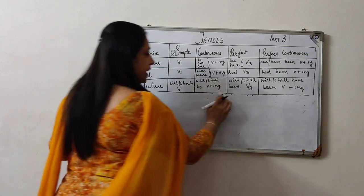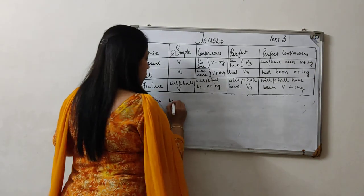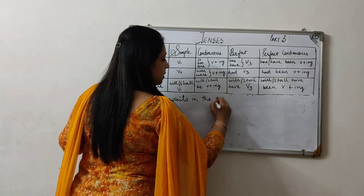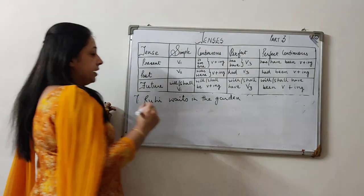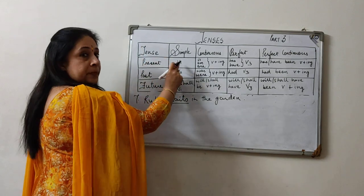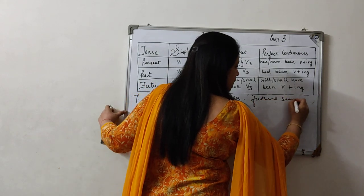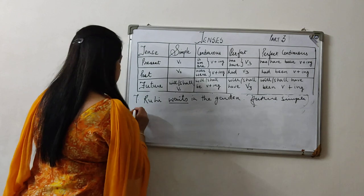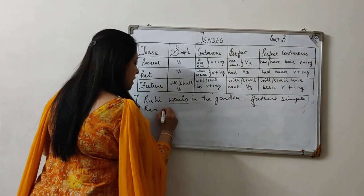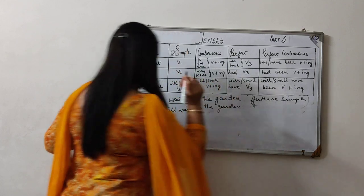Suppose the next sentence is: 'Ruhi waits in the garden.' 'Waits' is present simple. If we have to convert it into future simple — Ruhi will or shall, verb first form — so: 'Ruhi will wait in the garden.'